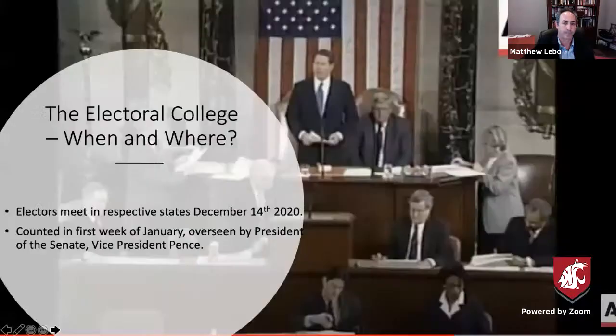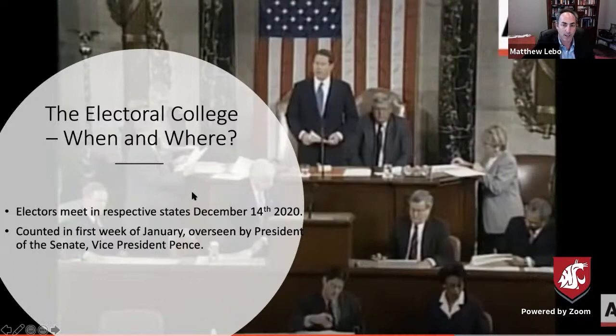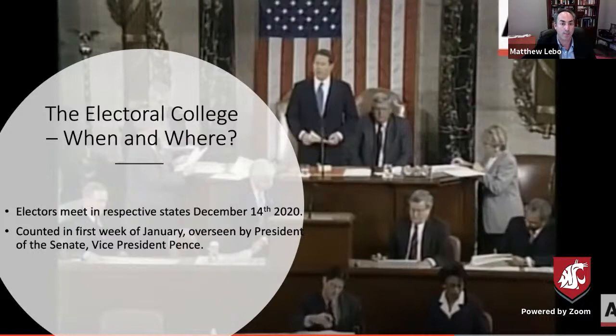The electors meet in their respective states on December 14th, and then they're all counted in the first week of January and overseen by the president of the Senate, who is Vice President Pence. In 2000, it was really surreal — Al Gore was vice president at the time, and as president of the Senate, he was the one who officially had to recognize the electoral votes that put George W. Bush in the White House ahead of him.